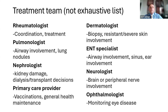The primary care provider is still very important — you still need somebody to help with your general health care. Also, since we use medications that can affect the immune system, vaccinations are important to keep track of. Dermatologists can be helpful if you need a skin biopsy to confirm vasculitis, and they can help with treatment of resistant or severe skin involvement. ENT specialists can help if there is upper airway involvement or involvement of the sinuses or ears. A neurologist can help if there is brain or peripheral nerve involvement. And if there's eye involvement, an ophthalmologist is very helpful because they have the tools to monitor the eyes that other specialists won't.